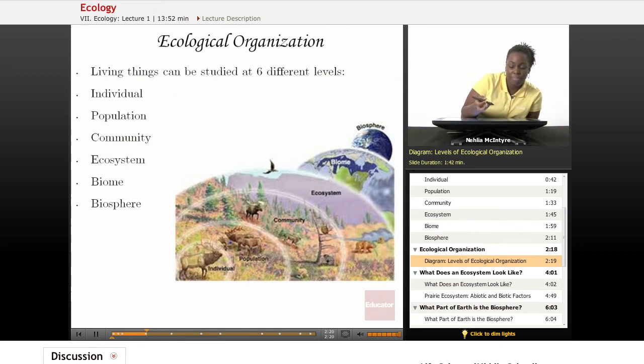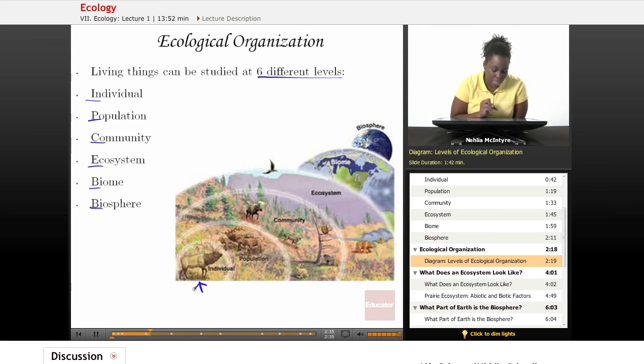Now, here is a diagram or a depiction of the six different levels of ecological organization. Again, we have the individual, the population, the community, the ecosystem, the biome, and the biosphere. So if we start off with the individual, here would be an individual animal.